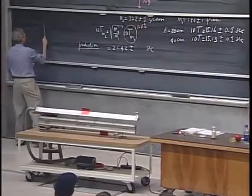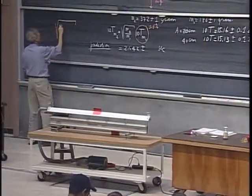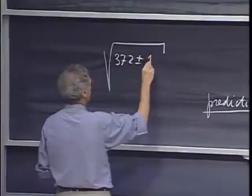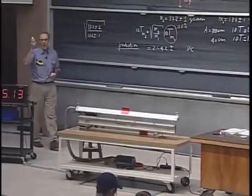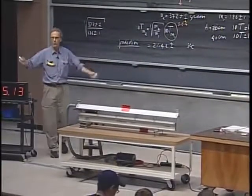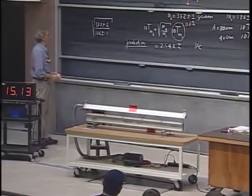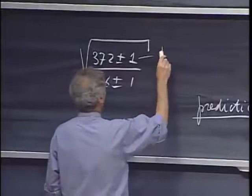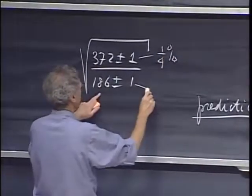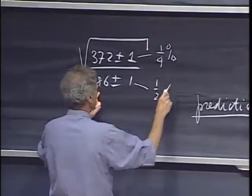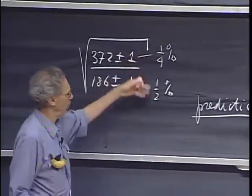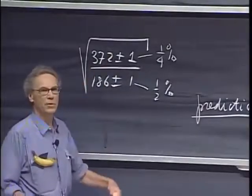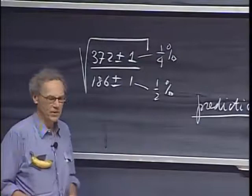You may think that the uncertainty in there equals the square root of 372 plus or minus one divided by 186 plus or minus one. And now you may argue, and it's completely reasonable that you would argue that way, you would say, well, this is roughly a quarter of a percent error here under the square root, and this is roughly half a percent error. One out of 200 is about half. So you would add up the two errors, a quarter plus half, that's about 0.7, and because of the square root, that becomes 0.35%, and that's wrong.